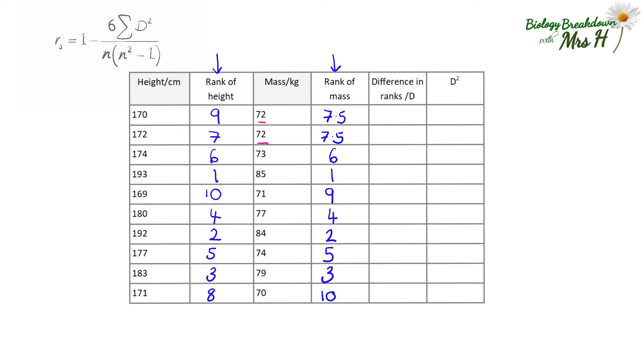Next, we have to calculate the difference in ranks. So for the first row, 9 minus 7.5 equals 1.5. Complete for the rest of the column. Then you need to square the difference. So 1.5 times 1.5 equals 2.25. Then complete the column.